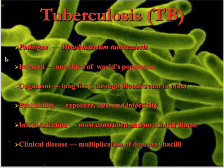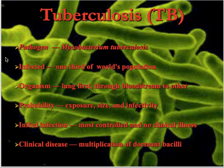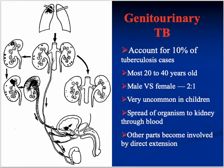Now the specific topic of this lecture: tuberculosis. As we know, tuberculosis is caused by Mycobacterium tuberculosis, and one third of the world population is infected. It is a very slow-growing, acid-fast bacillus. It accounts for 10% of tuberculosis cases, most commonly in 20–40 year-olds, with a male-to-female ratio of 2:1, very uncommon in children. It spreads to the kidney through the blood hematogenously, and because the kidneys are far apart, most of the time just one kidney is affected.